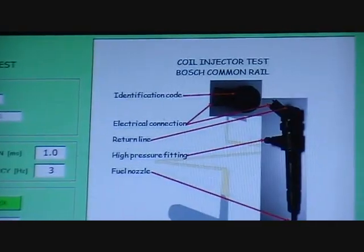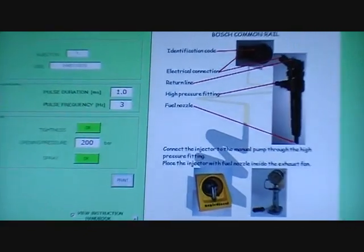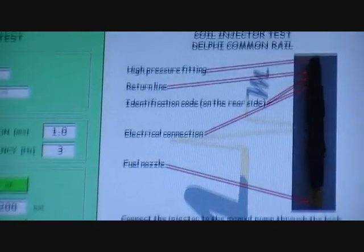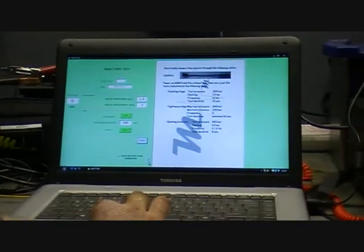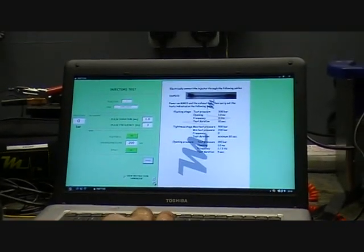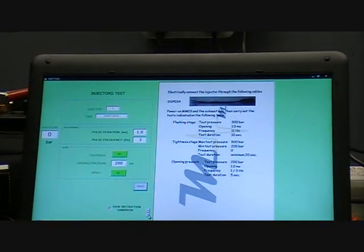Like we said then, you have instructions for each type of injector. So this is the Bosch coil injector. If we keep scrolling down you have the Delphi injector test procedure for this, Denso test procedure for that. If we escape back and go to piezo.